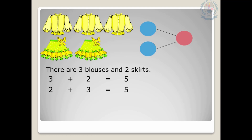Now using this addition sentence, I want to complete this number bond. Tell me which two numbers should I write in the blue circle. Yes, I have to write three and two. And what should I write in the pink circle? That should be five. Very good. So all together, how many clothes are there? There are five clothes all together.